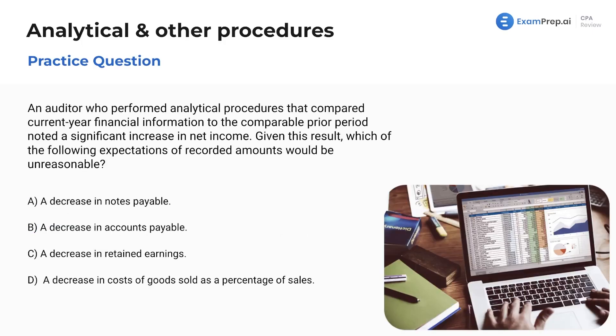Next question up here. Let's take a stretch. Take a breath. We'll run through them. We're having a good time. An auditor who performed analytical procedures that compared current year financial information to the comparable prior period noticed a significant increase in net income. Cool. That's the purpose of analytical procedures. To look for changes in certain accounts, certain transactions. Given this result, which of the following expectations of recorded amounts would be unreasonable?